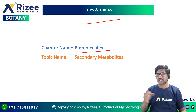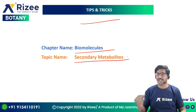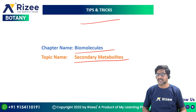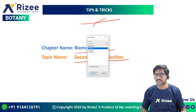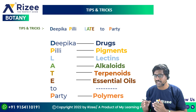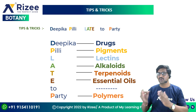In Biomolecules, we cover different types of proteins, amino acids, nucleic acids — RNA and DNA — and primary and secondary metabolites. Secondary metabolites are compounds that have extracts of the plant found outside the plant body.